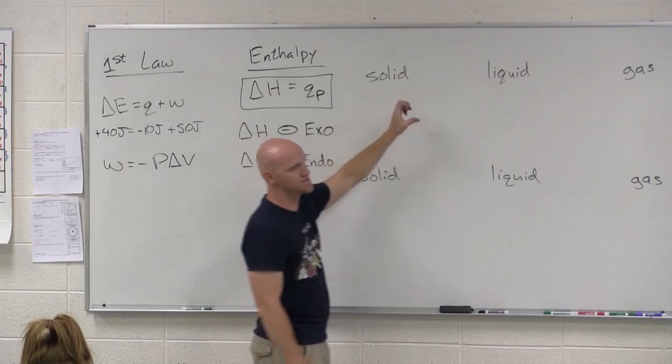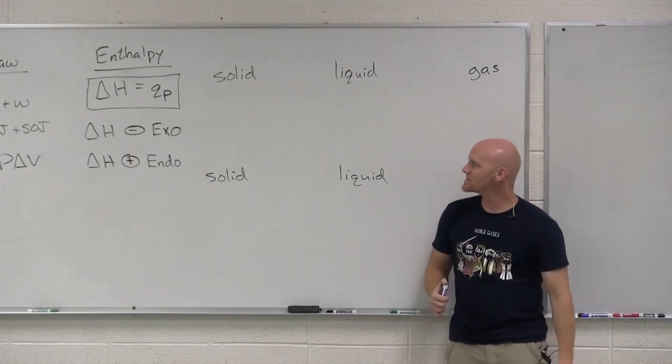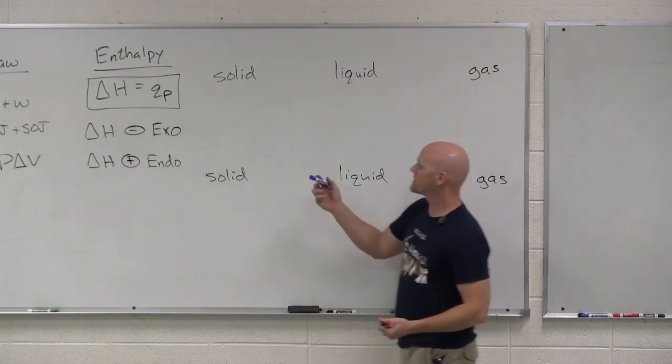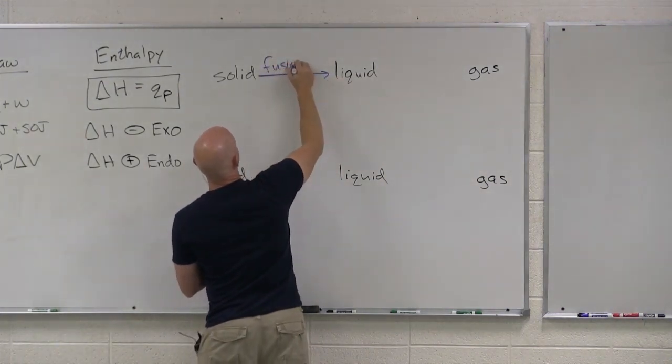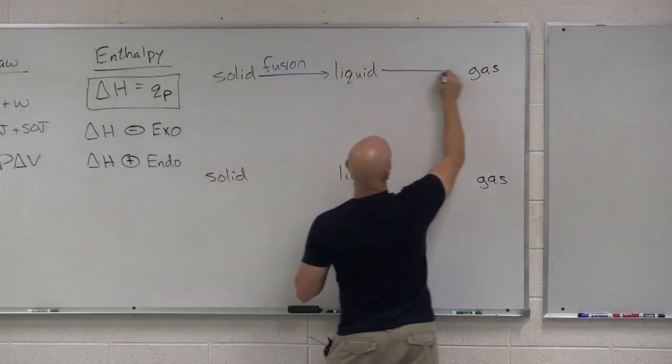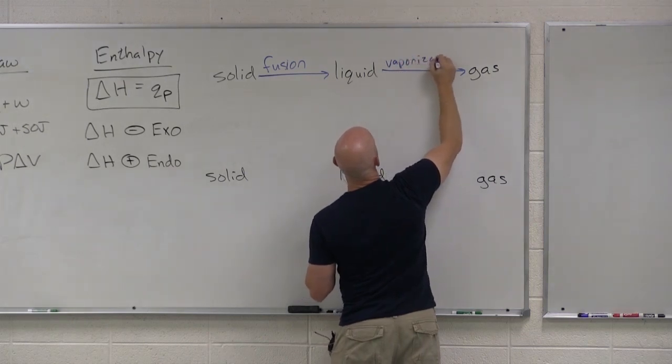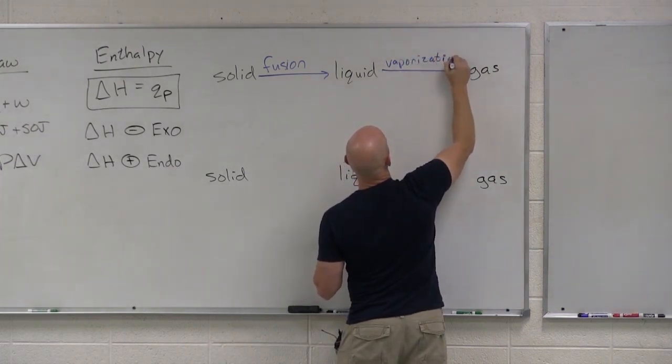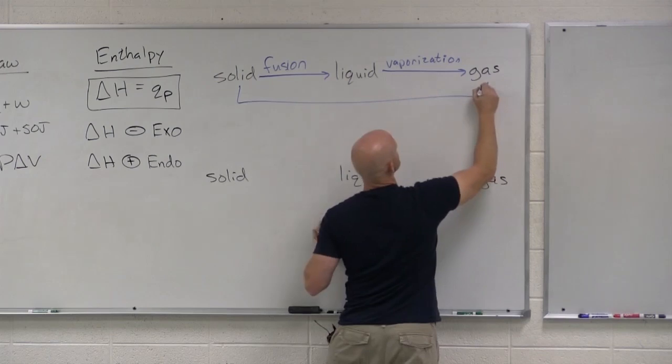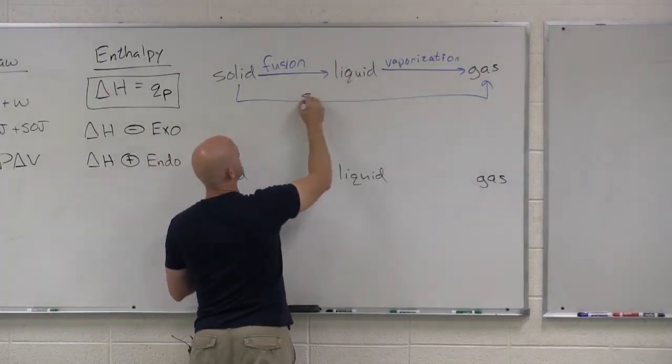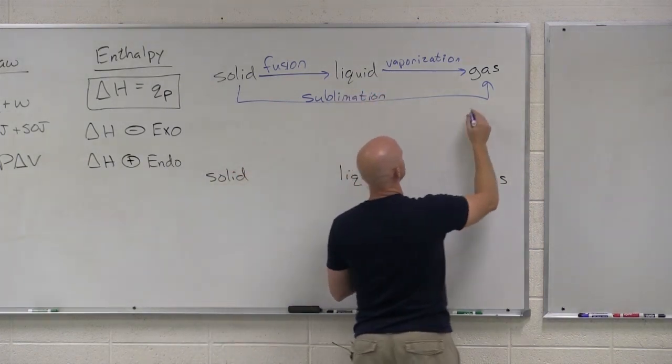We can also talk about the phase changes in terms of endo and exothermic as well. These are not reactions, but just processes in this case. These are physical changes, not chemical changes. So turning a solid into a liquid, what do we call that? Fusion or melting. You should know both names. Liquid into a gas, what do we call that? Vaporization. If you were in the kitchen, what would you call it? Boiling. And then finally, what is turning a solid into a gas? Sublimation.